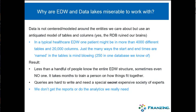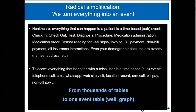So we created a radical simplification: we make sure that anything that can happen to an entity is turned into an event. In healthcare, we have everything that happens to a patient — check-in, check-out, a test, a diagnosis, a procedure, medication, sensor reading, a bill, a text note. We have about 50 types of events now, where one type could have many values — a diagnostic event could have 20,000 symptoms. Basically what that means is we go from thousands of tables to only one table: what we call the event table or the event graph.